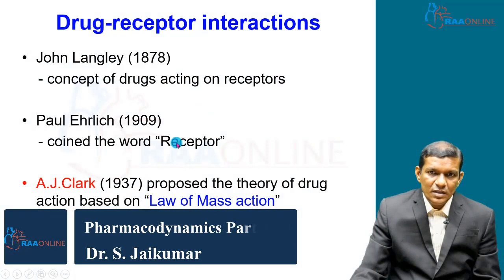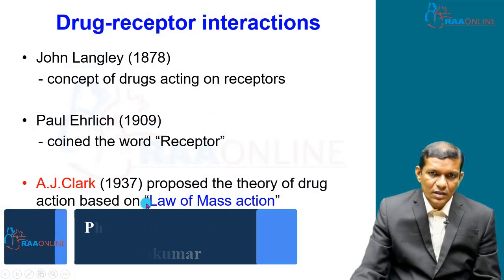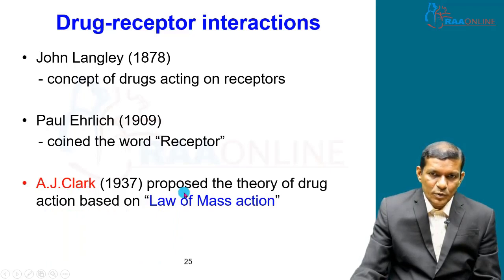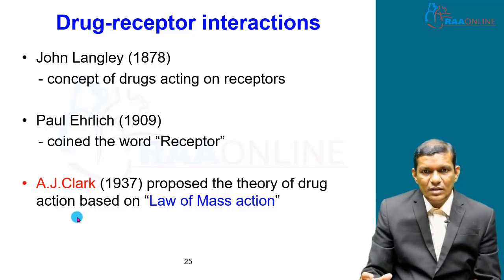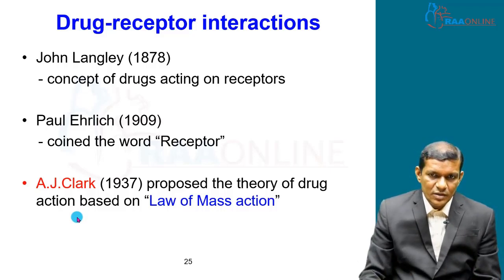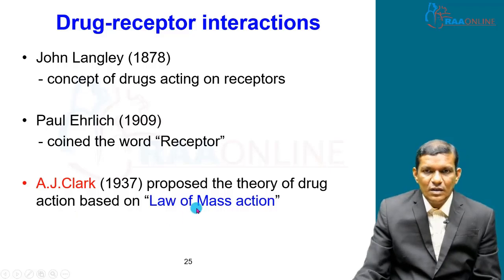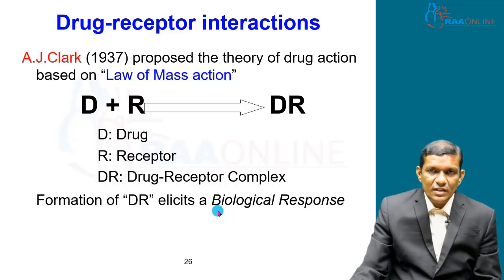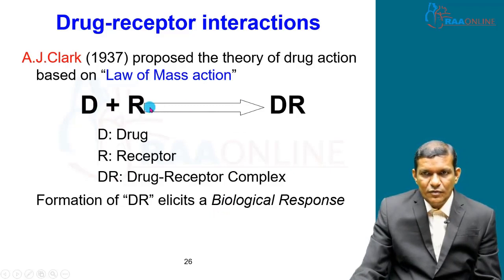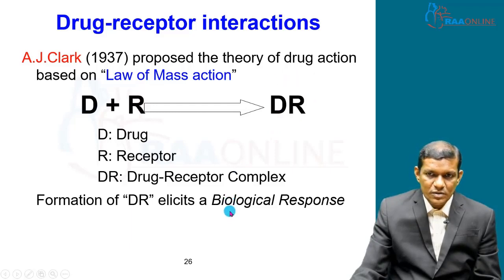Paul Ehrlich coined the term 'receptor' in 1909. AJ Clark is an important person who proposed the theory of drug action. He mentioned that the drug binds to the receptor and forms a complex — the drug-receptor complex — and which elicits a biological response. He proposed this based on the law of mass action.